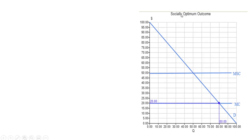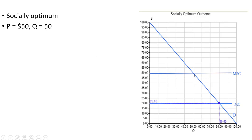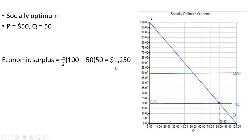Looking at the socially optimal outcome, the level of output is 50 units. The area between the demand curve and the marginal social cost curve up to the 50th unit gives a total economic surplus of $1,250.